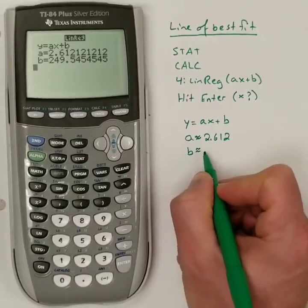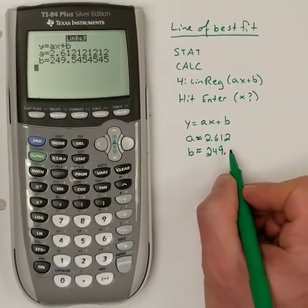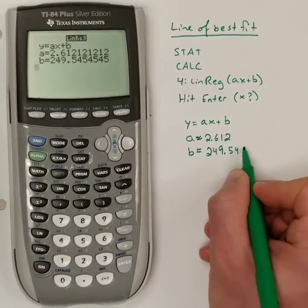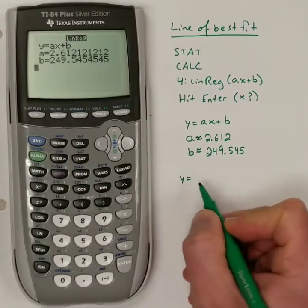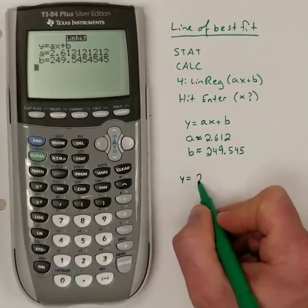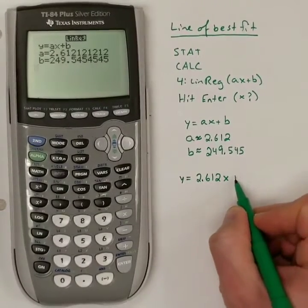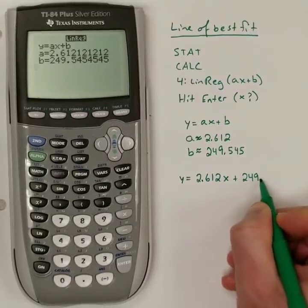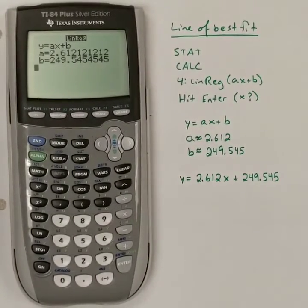a is 2.612 approximately. And the b value is approximately 249.545. Again, I'll round to three places after the decimal. And so, the linear model that it's giving us is y equals 2.612x plus 249.545.